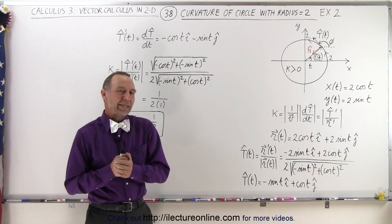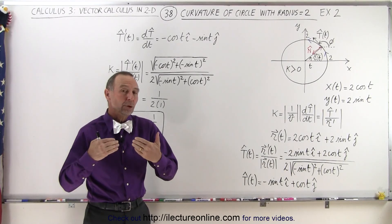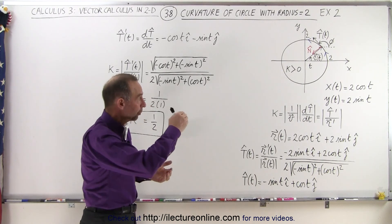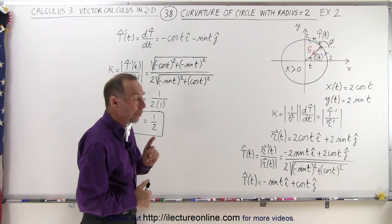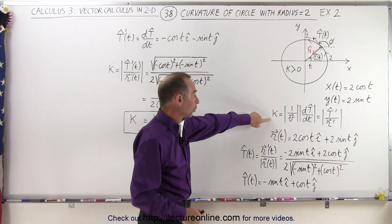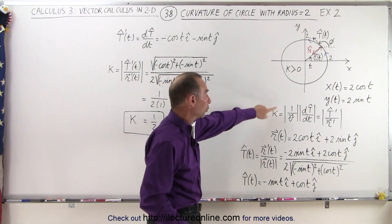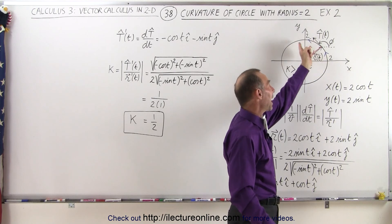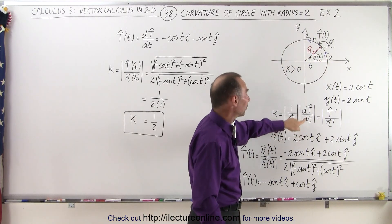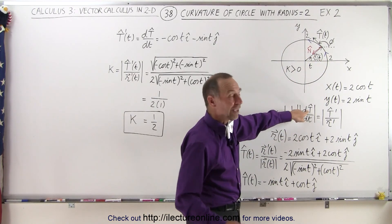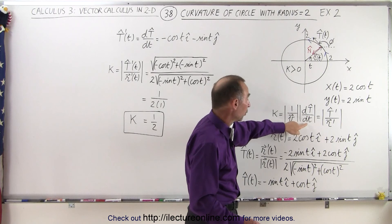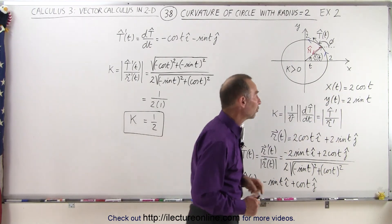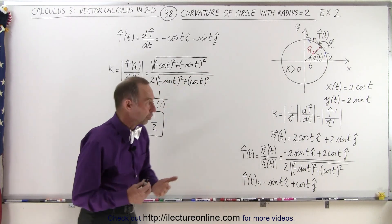Welcome to our lecture online. We're going to find the curvature of a curve — in this case the curve will be a circle — and we're going to use the equation that the curvature is equal to 1 over the magnitude of the velocity along the path of the curve, times the derivative of the unit tangent vector with respect to the parametric variable t. Here are the parametric equations we're going to use to describe the circle.